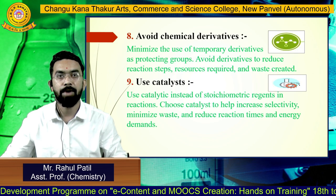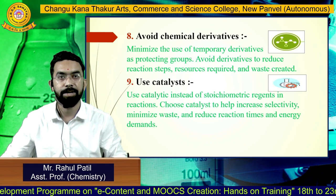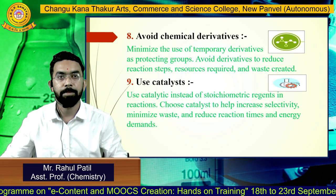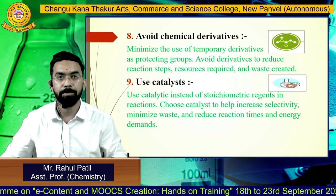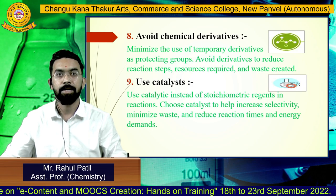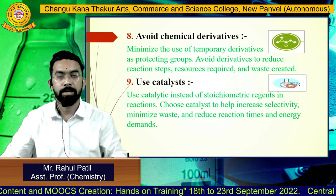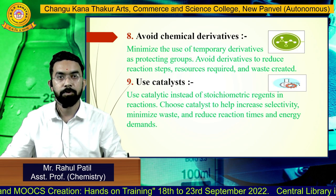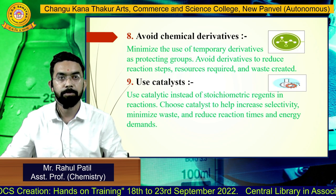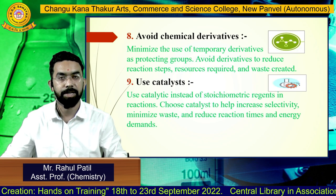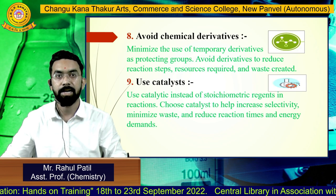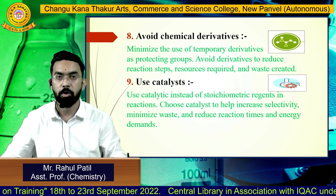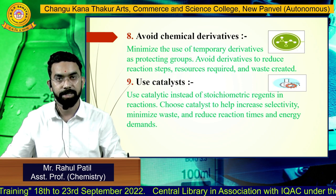Principle 8: Avoid Chemical Derivatives. Minimize the use of temporary derivatives. Principle 9: Use Catalysts. Catalytic reagents are more superior than stoichiometric reagents. Use catalysts instead of stoichiometric reagents wherever possible.